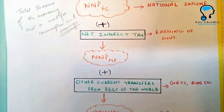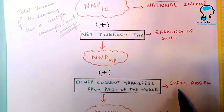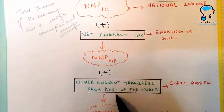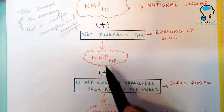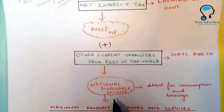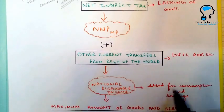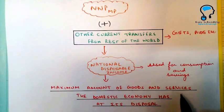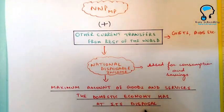When we receive something of money value or economic value from another country without paying them back, that is called a current transfer — for example, gifts or help received from another country. Any current transfer received from the rest of the world is added to our NNP MP to give us national disposable income, which is the final income used for consumption and saving — the maximum amount of goods and services the economy has at its disposal.